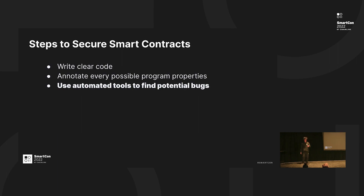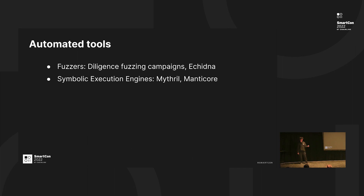The third step is to use automated tools to find potential bugs. Once you have the assertions ready from step two, all you have to do is use automated tools to break these assertions. The two classic methods are: fuzzers, which auto-generate random inputs to break assertions; and symbolic execution engines, which use symbolic inputs to generate constraints and solve them to break assertions. In this talk, I'll discuss symbolic execution engines.